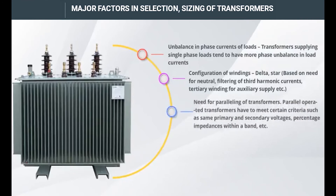The need for paralleling of transformers must be assessed. Parallel operated transformers have to meet certain criteria, such as having the same primary and secondary voltages and percentage impedances within a defined band.